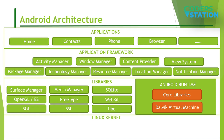Android Runtime environment is one of the most important parts of Android. It contains components like Core Libraries and Dalvik Virtual Machine. Mainly, it provides the base for the application framework and powers our application with the help of the core library, like Java Virtual Machine. Dalvik Virtual Machine is a register-based virtual machine, specially designed and optimized for Android to ensure that a device can run multiple instances efficiently. It depends on the Linux kernel for threading and low-level memory management. The core libraries enable us to implement Android applications using the standard Java or Kotlin programming languages.